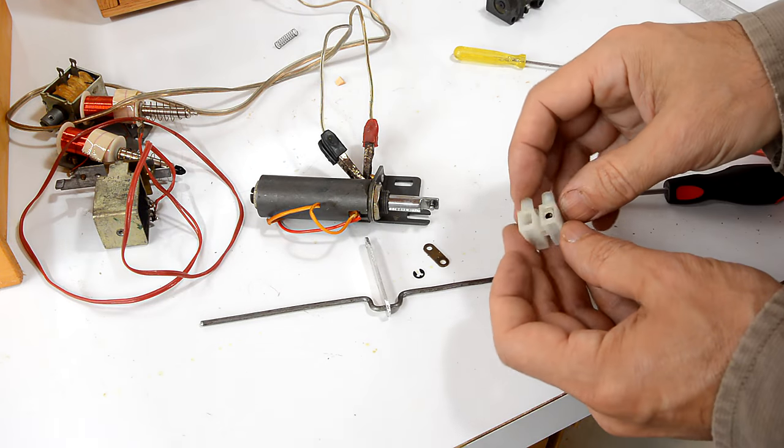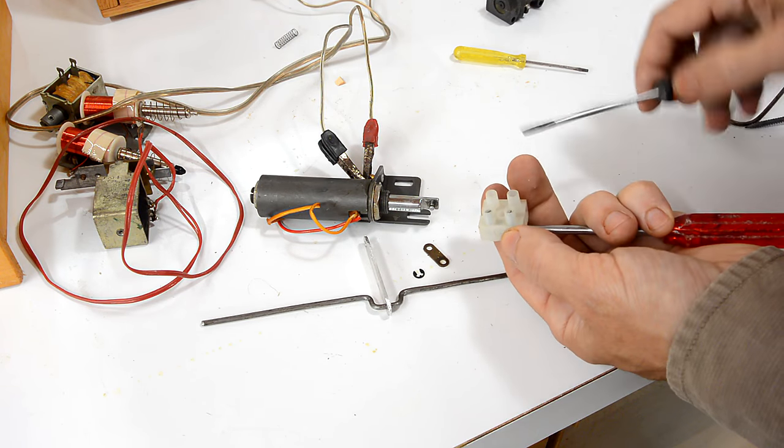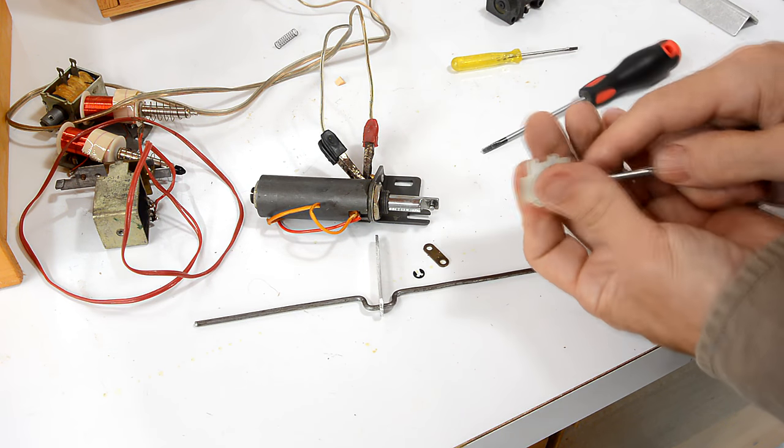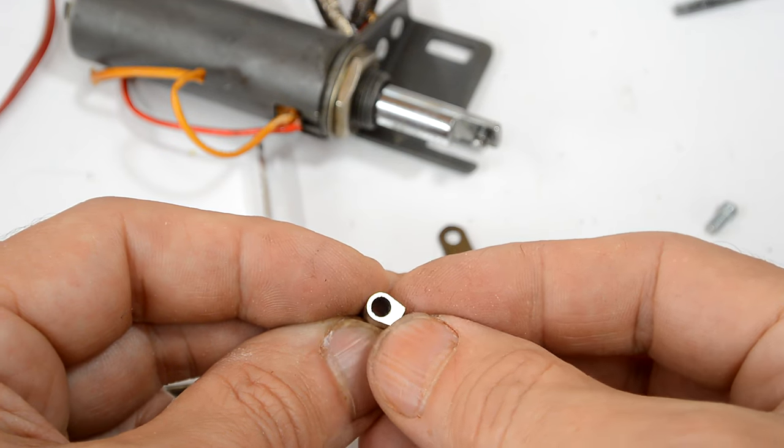I still need some sort of camshaft for activating when to energize the solenoid. And for that, I think I might use the inside of this barrier strip connector thingy. This thing already looks like it could be a cam. I just need to round it off a little bit.